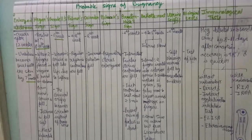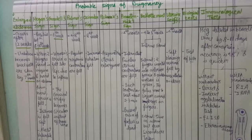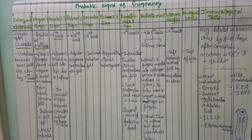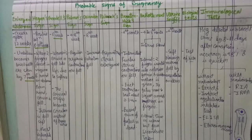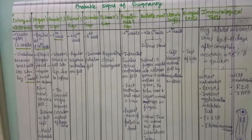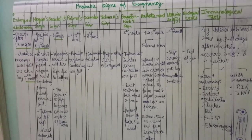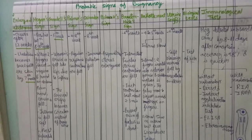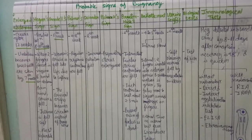Hegar sign is found positive between 6 to 10 weeks. With two fingers placed in the vagina and a hand on the abdomen, a firm hard cervix is felt, above which an elastic body of the uterus is palpated, while between the two the isthmus is felt as a soft compressible area. Goodell sign is positive at the sixth week: the cervix progressively softens and can be felt like lips, whereas in a non-pregnant woman the cervix feels like the tip of the nose. The cervical orifice during the last two months becomes circular and admits the point of the finger to a greater depth.